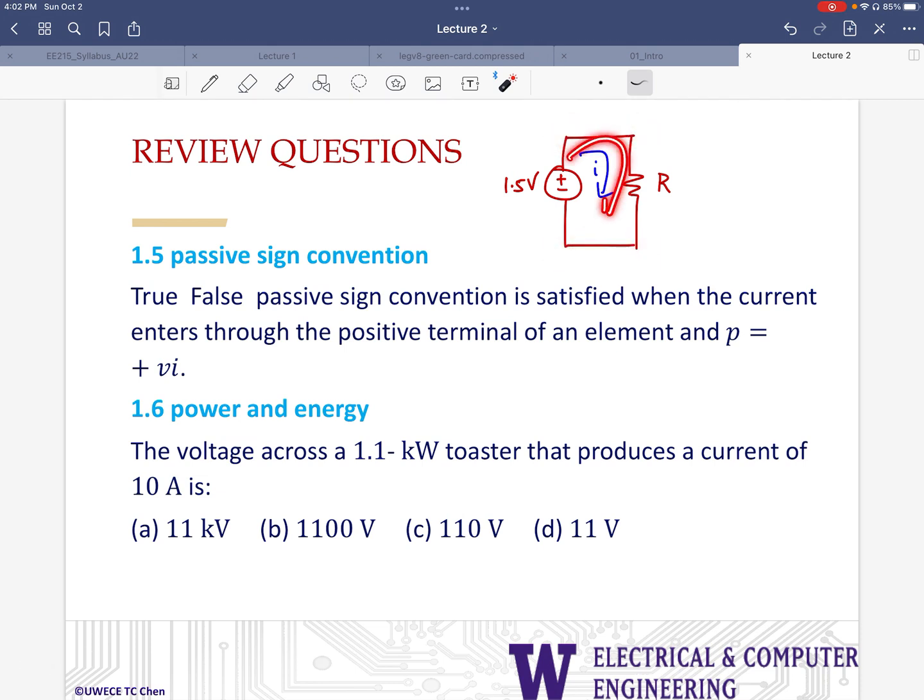The direction of the current is going to be clockwise in this case. And as you can see, for the resistor, the current is entering the positive terminal. And we also know that resistors absorb power. How much power? V times I. In this case, 1.5 times I. And passive sign convention is being satisfied over here, which means this is again true.